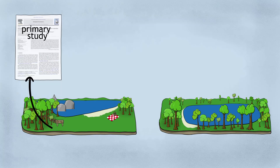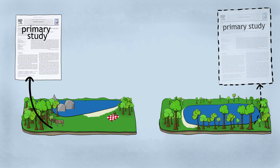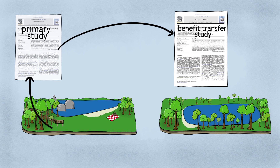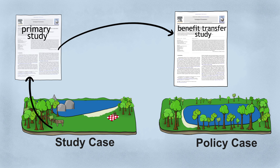Same with an ecosystem service — we would defer to a primary study for accuracy, but a benefit transfer study can give an approximation. The study we're learning from we'll call the study case, and where we're trying to apply the information we'll call the policy case — the place where we're probably trying to figure out what the best decision or policy should be. The simplest transfer would just be to transfer the unadjusted unit value: take the average results of the study case and apply it to the policy case.